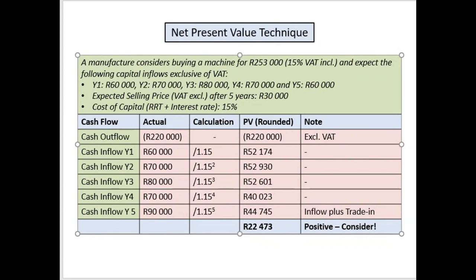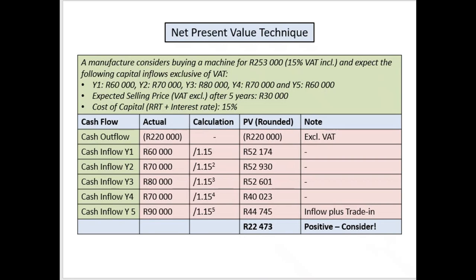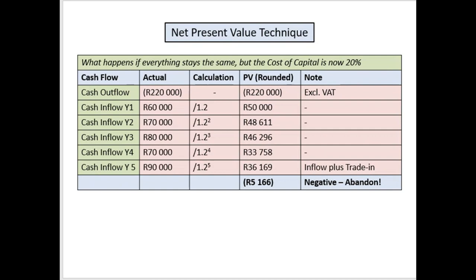So this is where we ended — we said 22,700 positive at 15%. Now we ask: if the cost of capital is 20%, how good is this investment? Everything stays the same — the cash outflow and inflows are identical — but the discount factor changes from 1.15 to 1.2, because 20% as a decimal is 0.2, plus 1 gives 1.2.